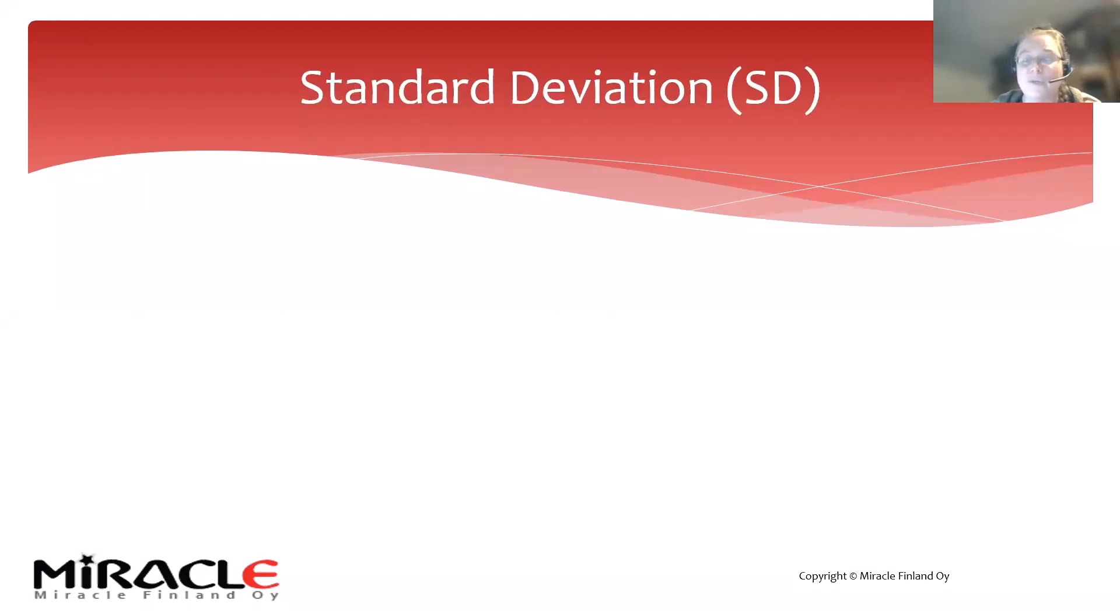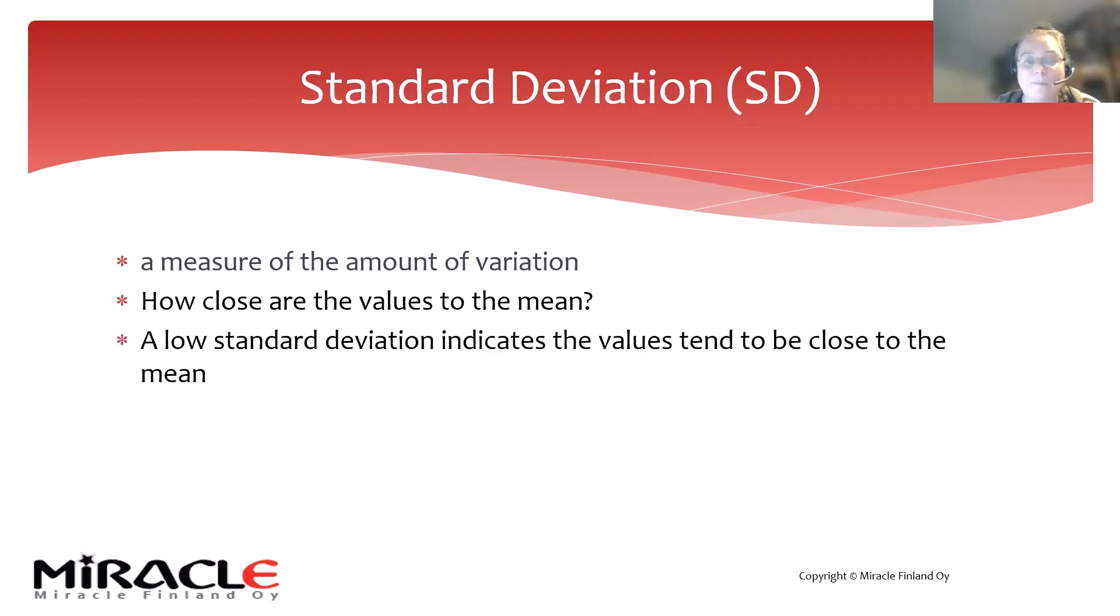Then we talk about standard deviation. What does that mean? It's a measure of the amount of variation—how close are the values to the mean? A low standard deviation indicates that the values are very close to the mean, while a high one means the values are very spread out.